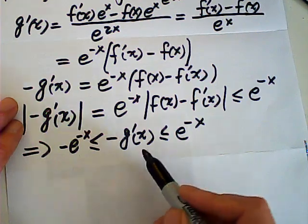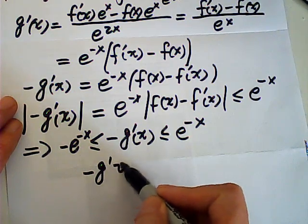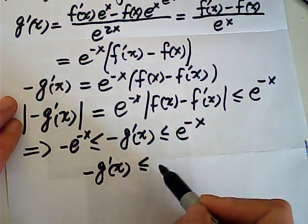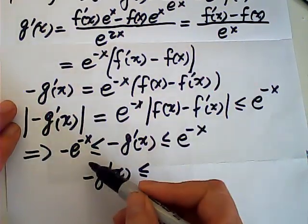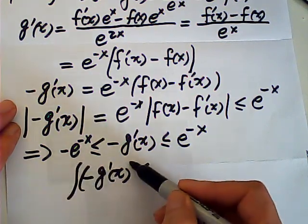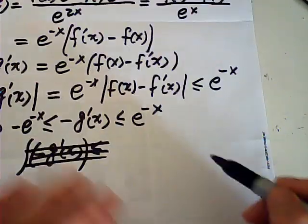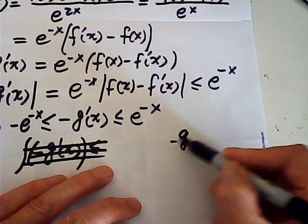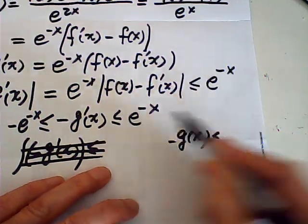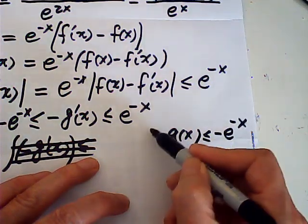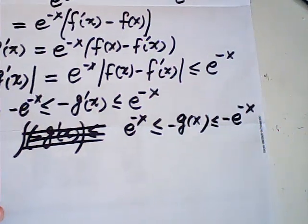Then negative g prime of x, well I take the integral. That means that negative g of x, just the integral of this one, this is a negative e to the negative x, and this side integral is an e to the negative x.